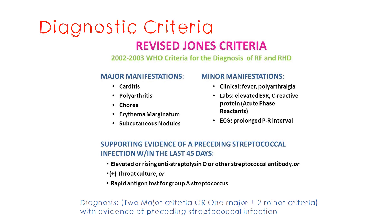For diagnosis you need either two major criteria, or one major criterion plus two minor criteria, with evidence of strep infection — either a positive throat culture, rising ASOT levels, or positive rapid antigen tests. The newest criteria differentiate between high-risk and low-risk populations. Low-risk populations are those with a low incidence and prevalence of acute rheumatic fever, and you need more evidence to confirm the diagnosis in this population.